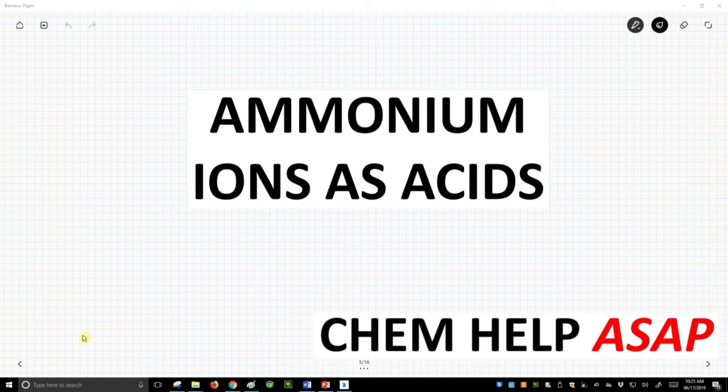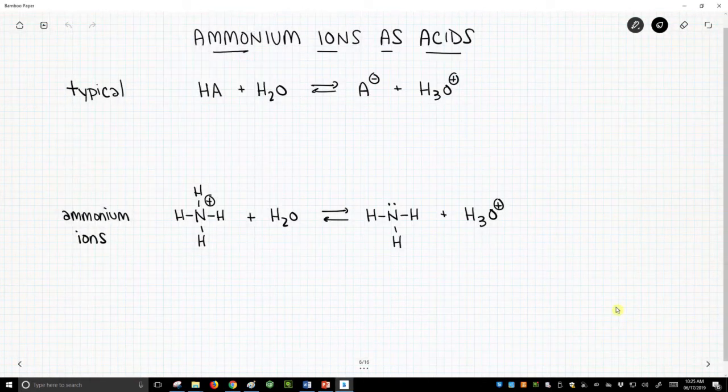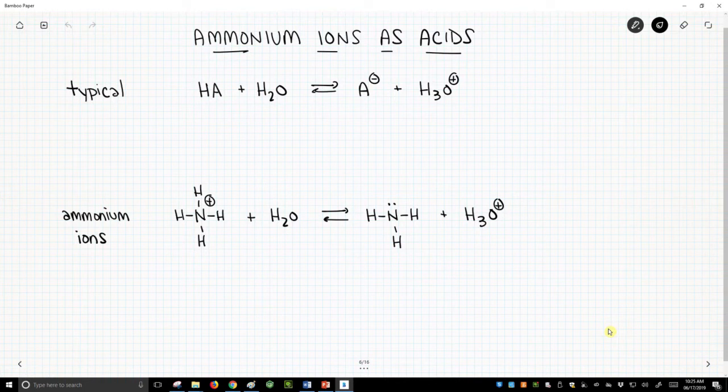Well, when do we not have an acid that's neutral? And one example is with ammonium ions. So on the screen, the top reaction, this is our typical reaction. Note that we have an acid is HA, and this is a neutral acid.